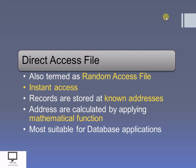That's why the names given are direct access file or random access file, as we can access any of the records directly or randomly. This type of file provides the pleasure of instant access to any of the records. This instant access is possible because all the records are stored at known address locations. These address locations are calculated by applying some mathematical function. If you are familiar with hashing, then hashing is the best suitable example, as it is helpful to calculate the address and go to that address location directly.